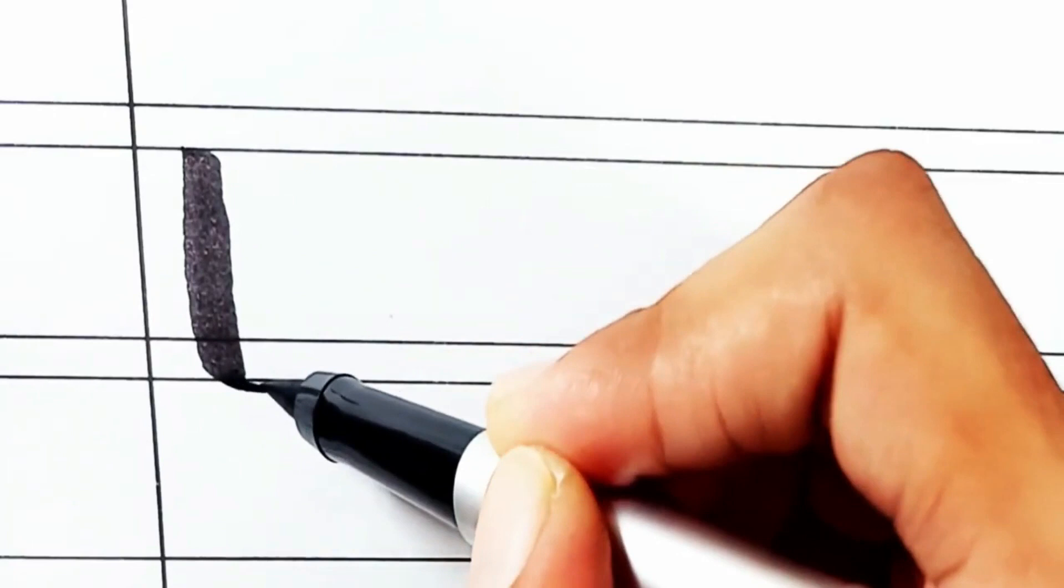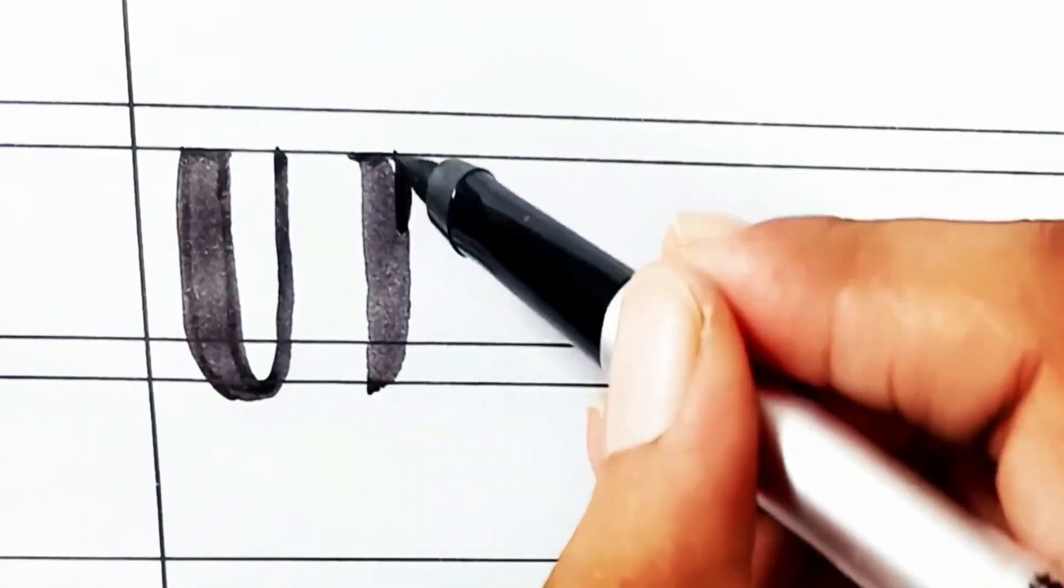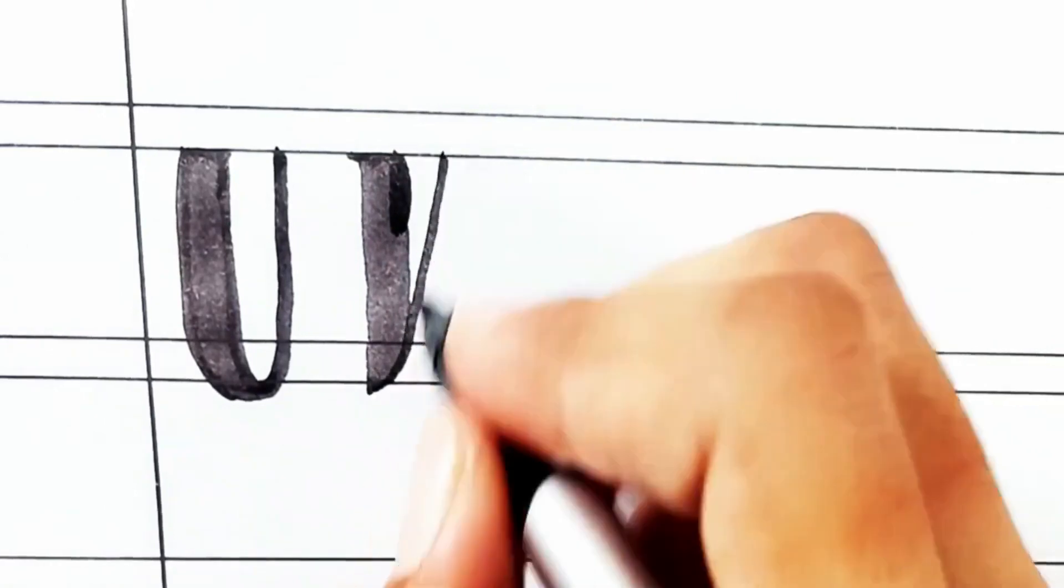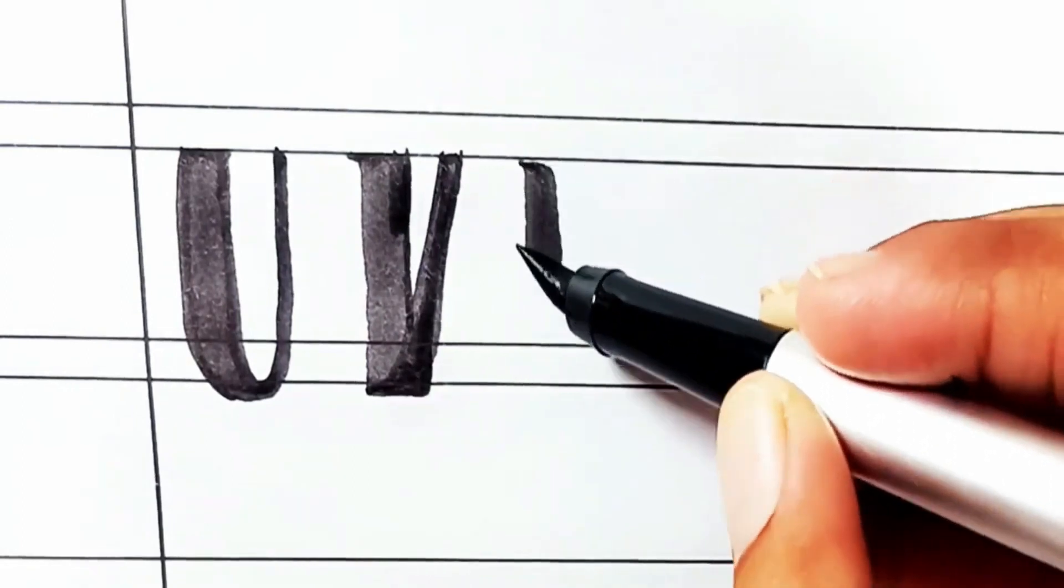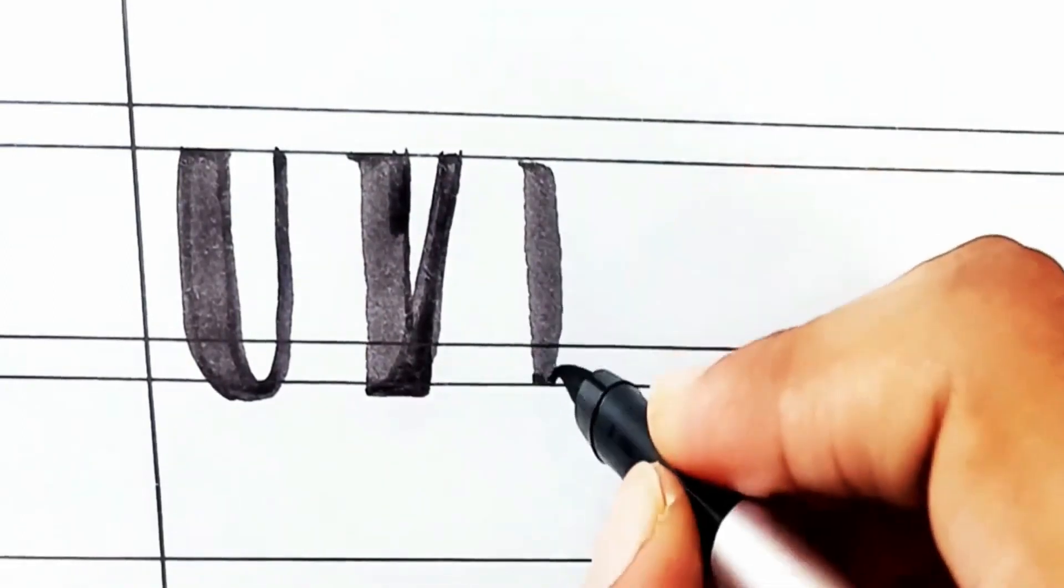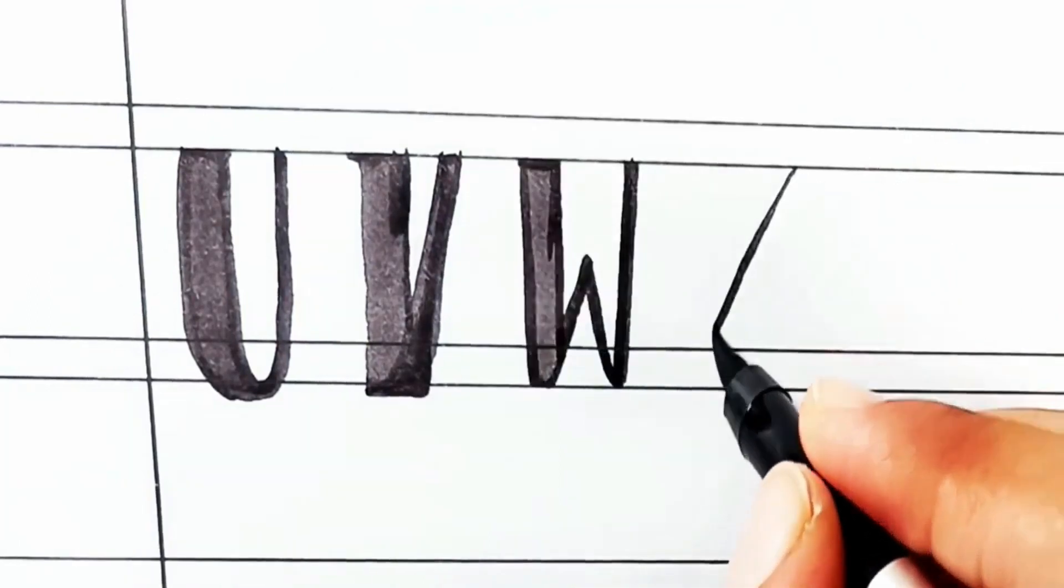U. U for umbrella. V. V for violin. W. W for web.